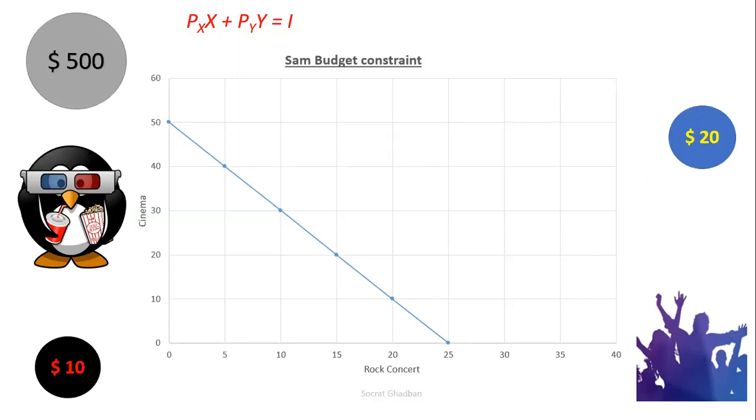So in our case here, the budget constraint line is 10 C. 10 is the $10. And C is the times that Sam goes to the cinema.